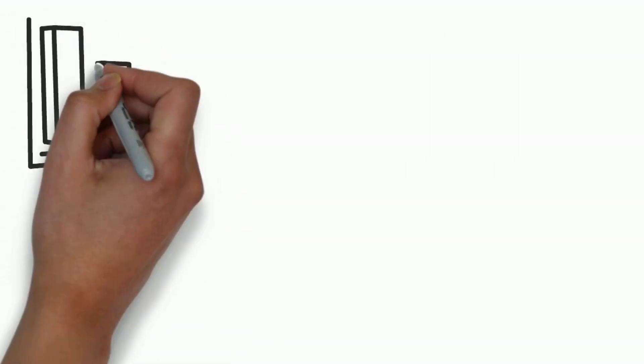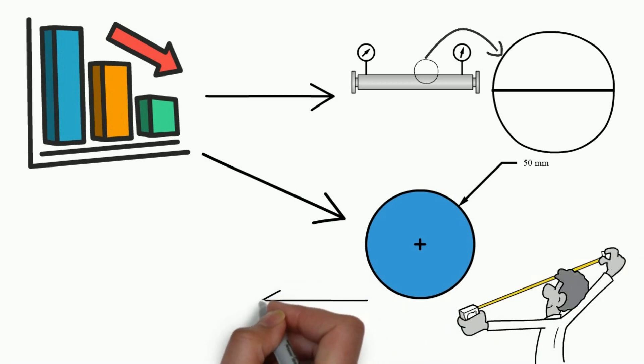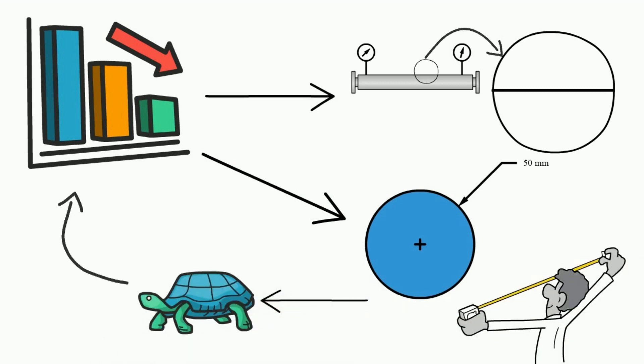There are also ways to minimize the frictional head loss in fluid systems. One way is to use pipes with smoother walls, which will reduce the amount of resistance that the fluid encounters. Another way is to use larger diameter pipes, which can reduce the velocity of the fluid and thus the amount of pressure drop.